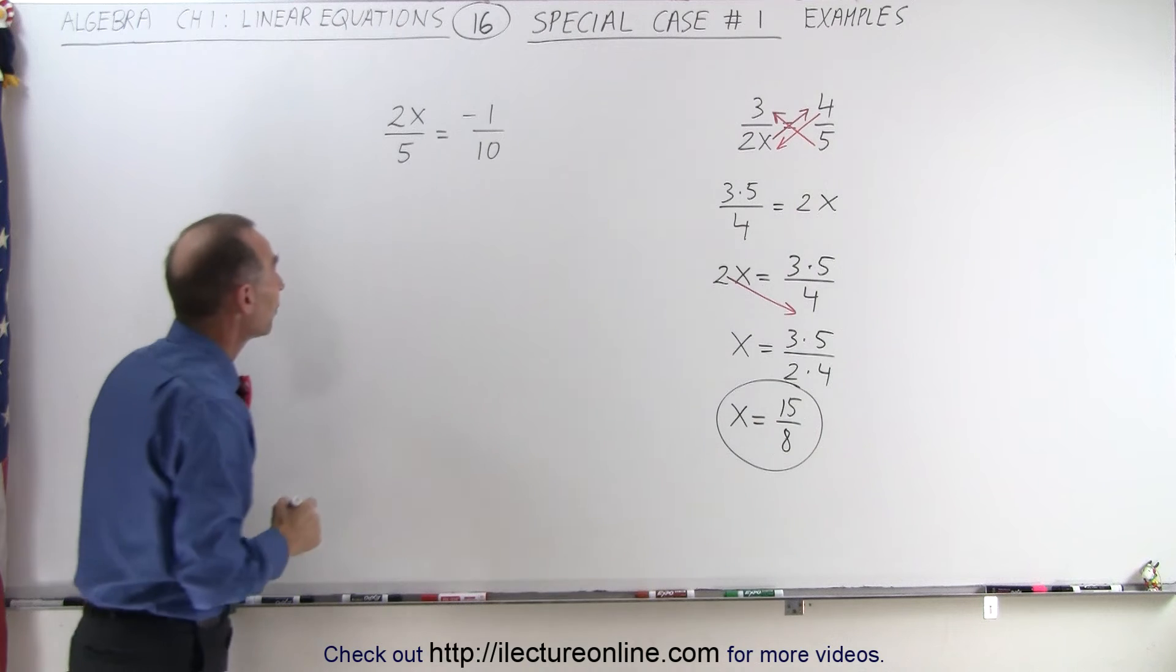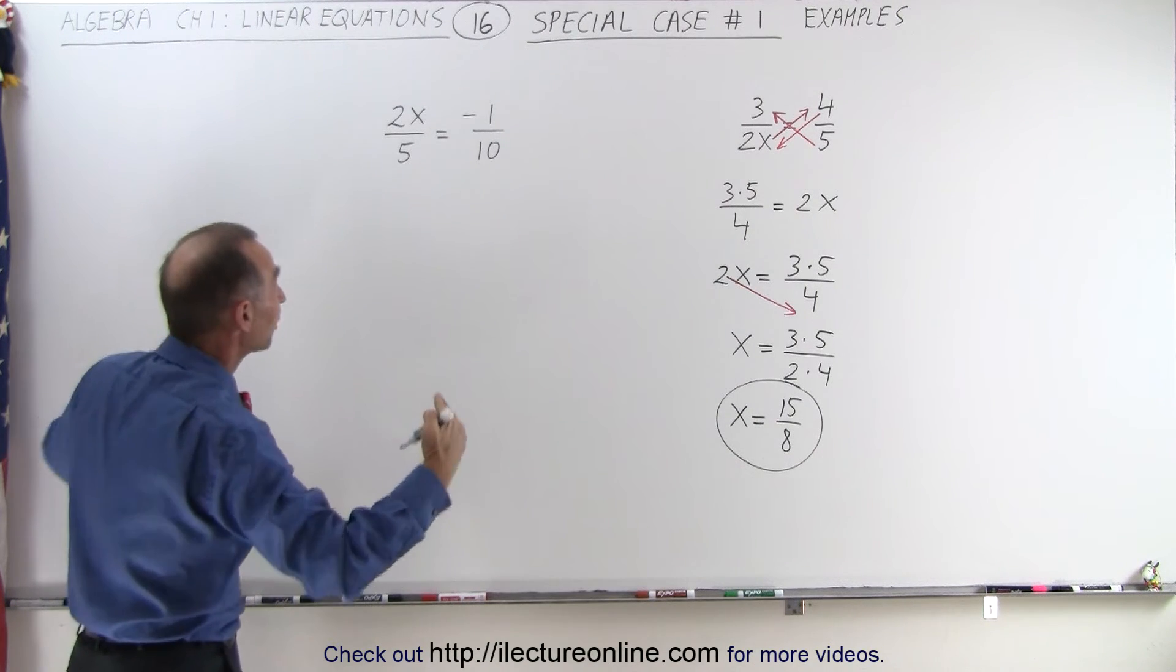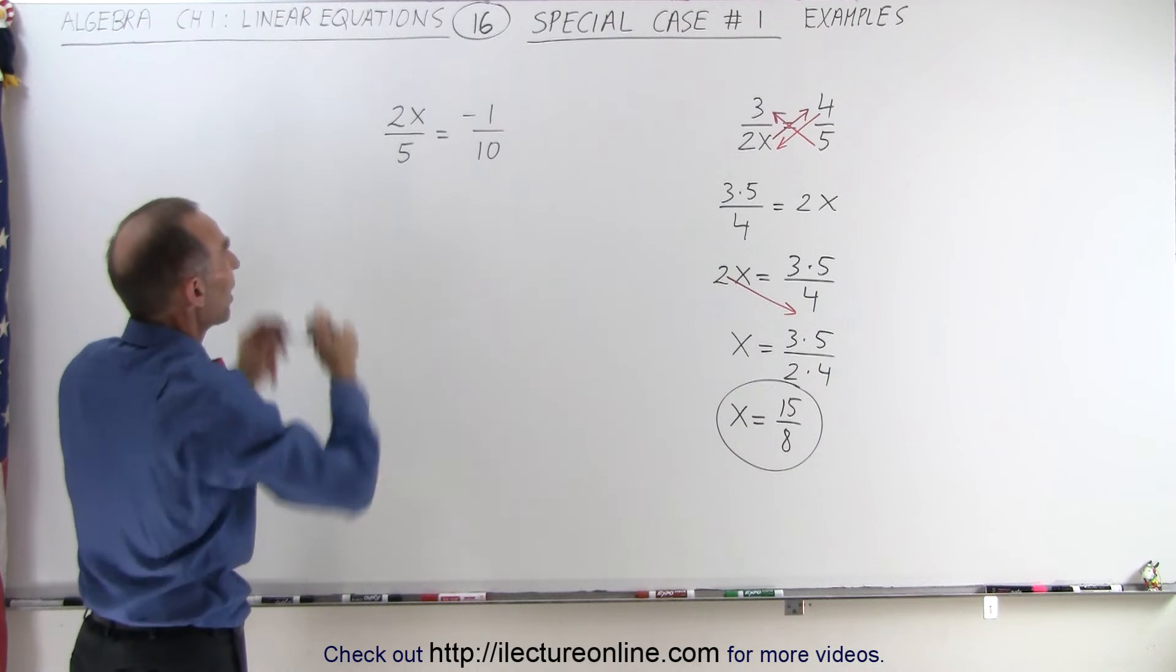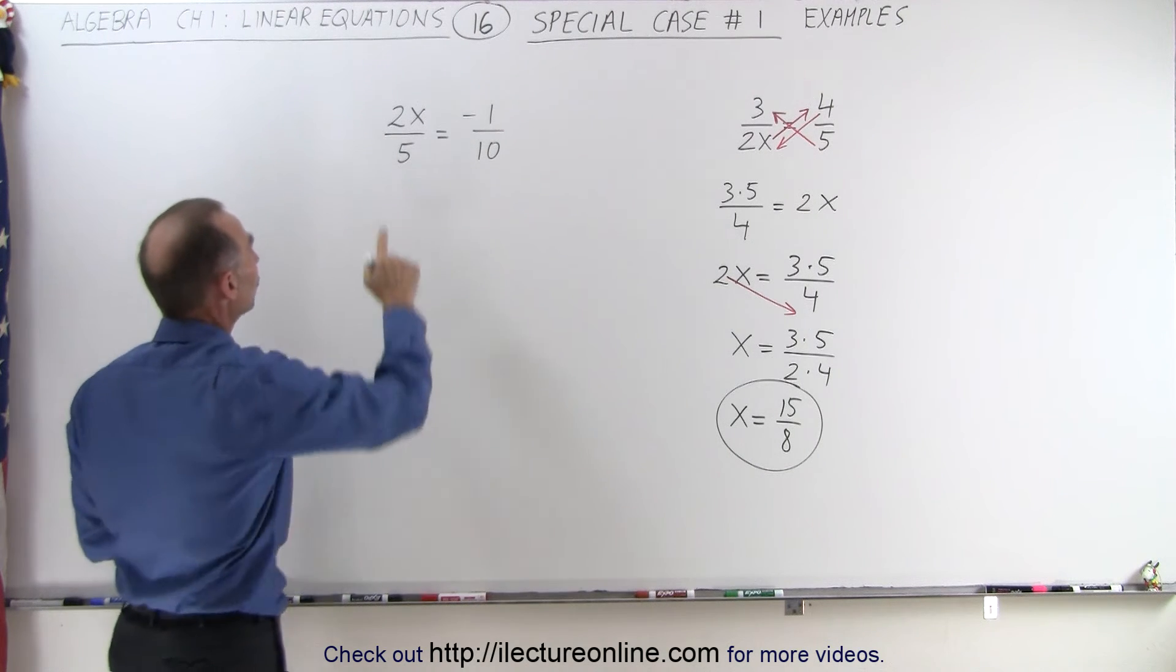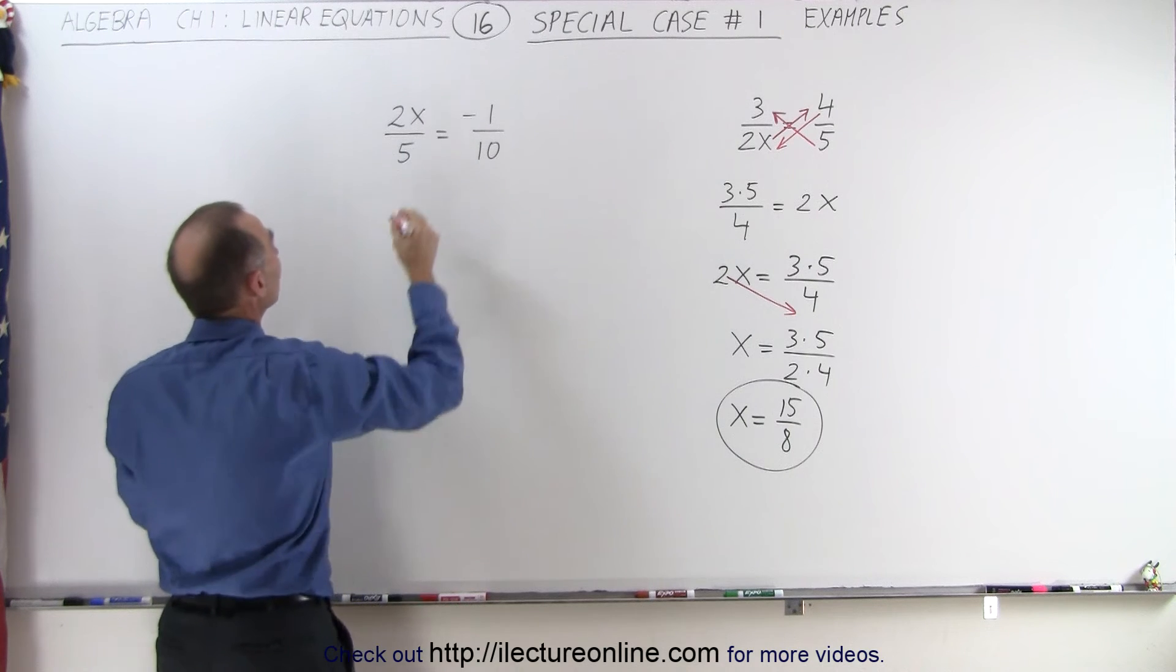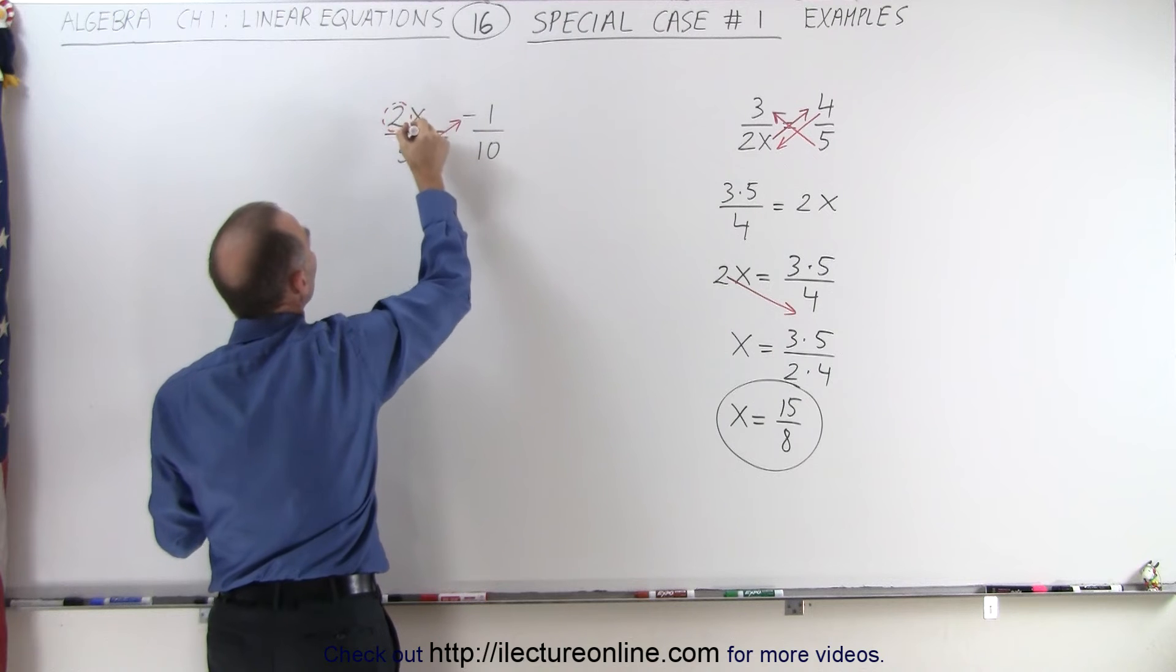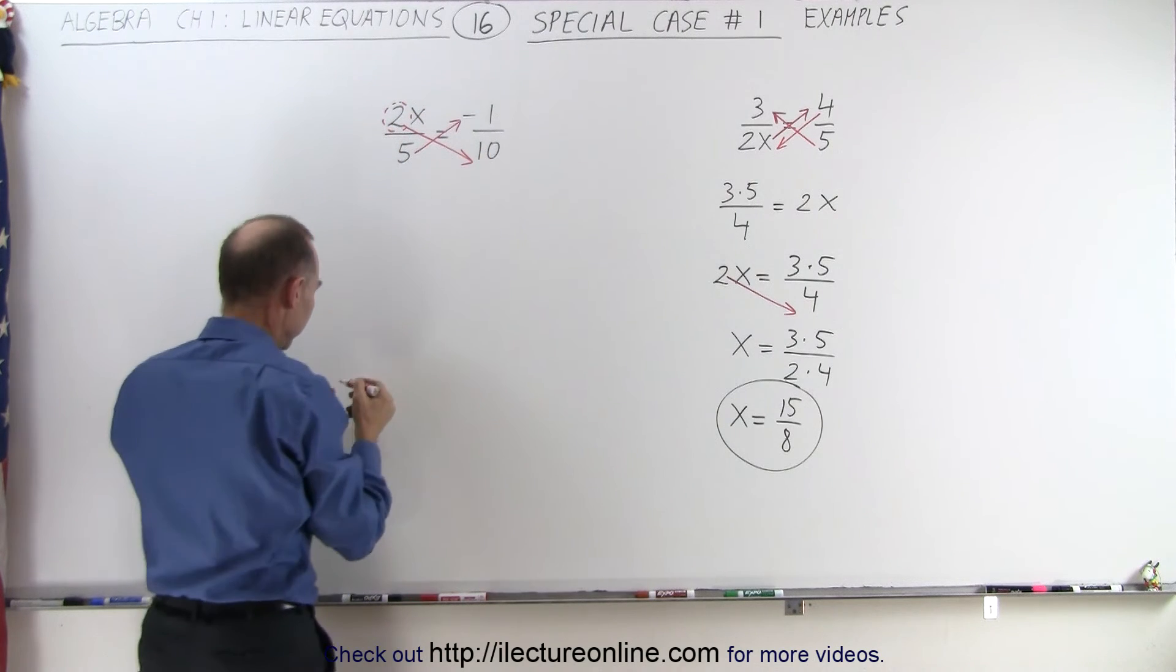Coming over here we see 2x over 5 equals negative 1 over 10. Again, I can move things across the diagonal because I have two fractions that are equal to each other. The x is already where I want it to be, so I'm going to move the 5 across the diagonal this way and take the 2 and move it across the diagonal this way.